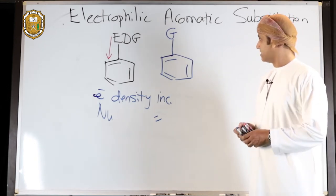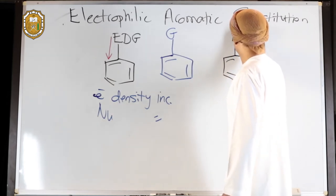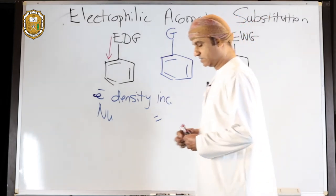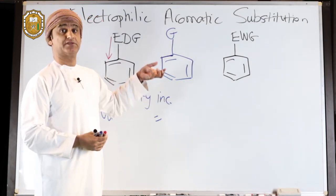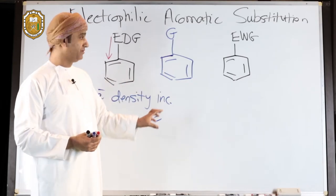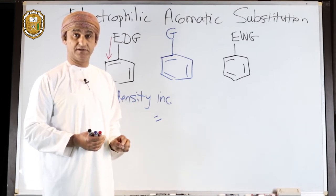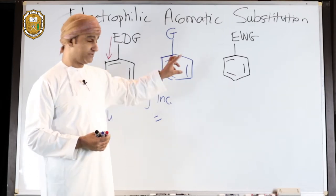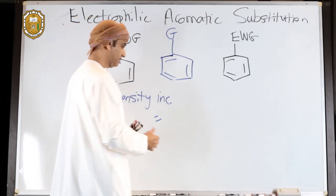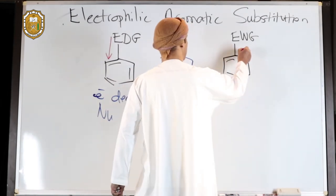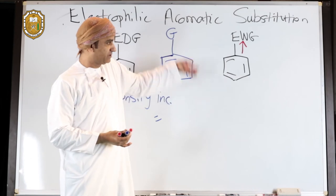Electron-withdrawing groups — here is a general representation for them. This is a substituted benzene with an electron-withdrawing group. An electron-withdrawing group, as the name suggests, withdraws electrons from the benzene ring. The electron density, as a result, in the benzene ring is reduced. Therefore its nucleophilicity is lowered, and as a result, the reactivity of this substituted benzene with an electron-withdrawing group is also lowered or decreased. We can show this with an arrow similar to the first case.